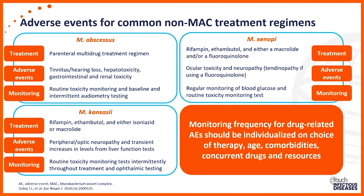Mycobacterium kansasii is another common non-MAC lung disease to treat — the only NTM that really responds to TB treatment with isoniazid, ethambutol, and rifampin, three of our big four for standard TB therapy. Visual monitoring with ethambutol is important; educate the patient to report any vision change. Consider drug-drug interactions around rifampin, and liver chemistry monitoring with isoniazid.